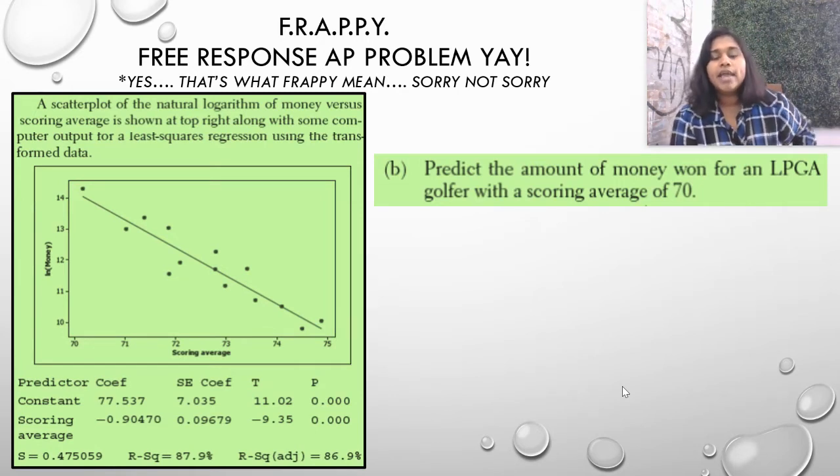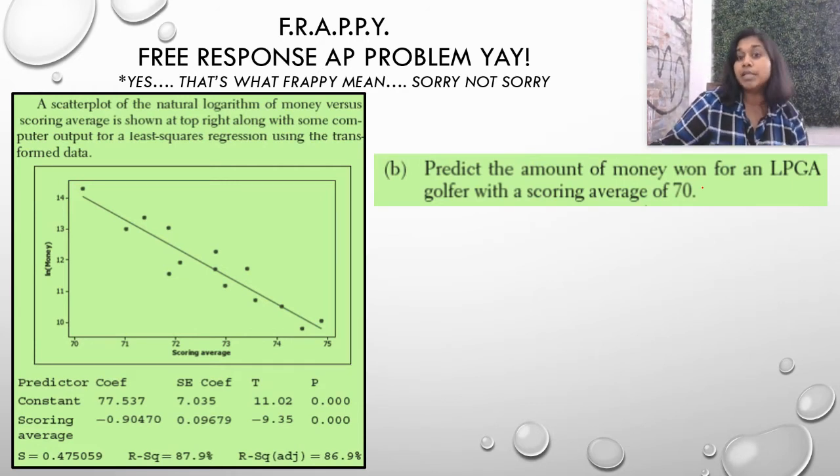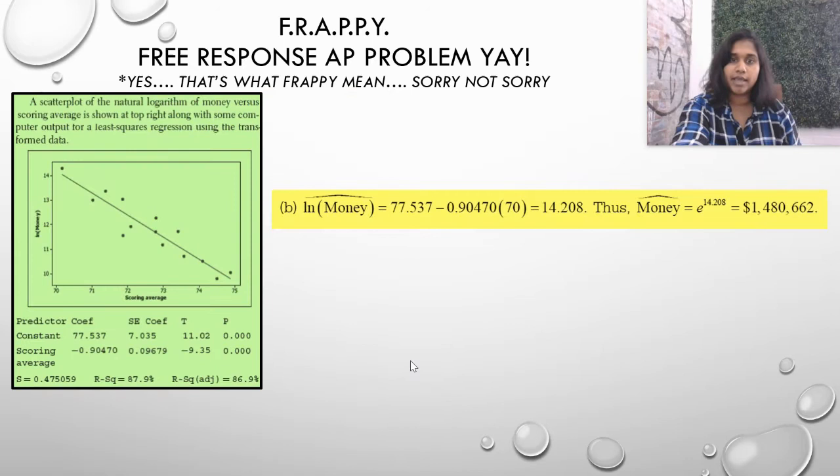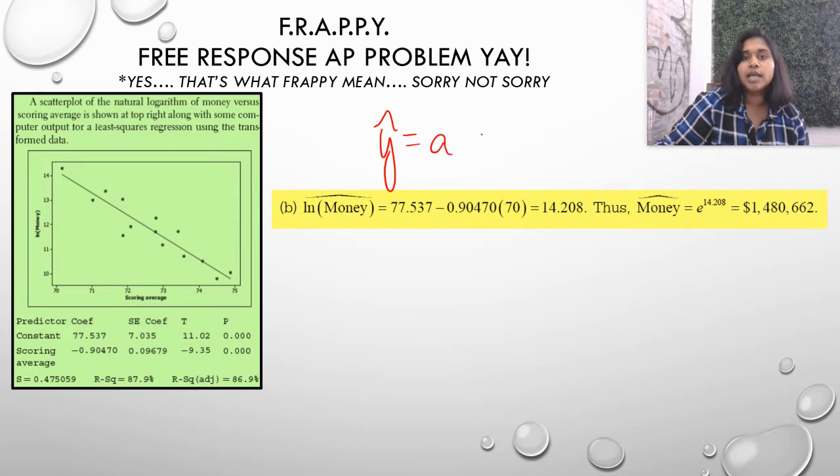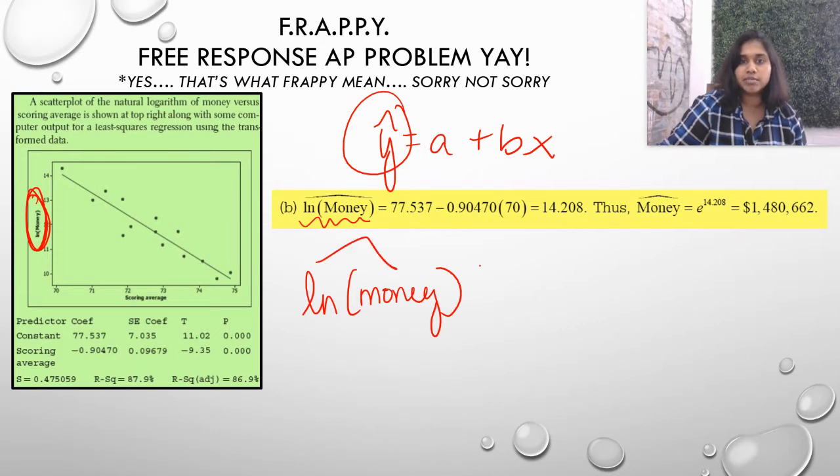They gave us a mini tab info, and they want us to predict the amount of money won for an LPGA golfer with a scoring average of 70. In order to plug in this 70, we need our y-hat formula. I've pulled up the answer, so you can read along as you pull the information. Our y-hat formula, we first have to break up. What is our y-hat equal to? They gave it to us. It's the ln of the money. So, there's my new formula.